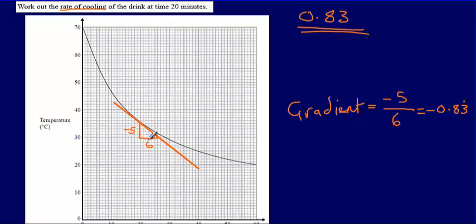and I'm talking here about it decreasing by that amount, I would ignore that negative and say that it's decreasing by 0.83 degrees centigrade per minute. So final answer: 0.83 degrees centigrade per minute.